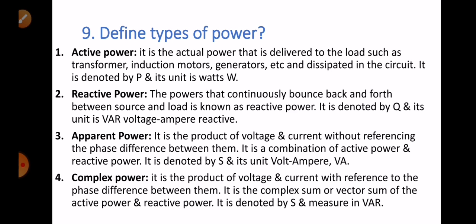Number three: apparent power — it is the product of voltage and current without referencing the phase difference between them. It is the combination of active power and reactive power, denoted by S and its unit is volt ampere (VA). Number four: complex power — it is the product of voltage and current with reference to the phase difference between them. It is the complex or vector sum of active and reactive power, also denoted by S and measured in VA.